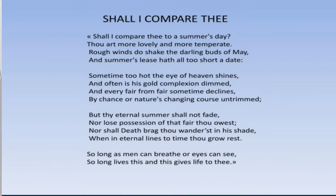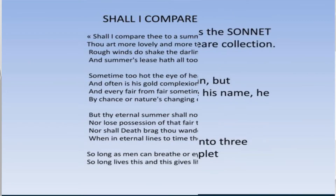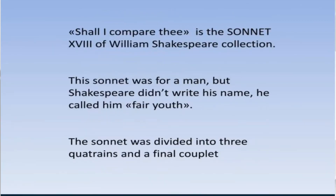Before we begin, first of all we should know that a sonnet has 14 lines. Second, this sonnet was written for a man, but Shakespeare didn't write his name — he called him Fair Youth. The sonnet is divided into three quatrains and a final couplet.